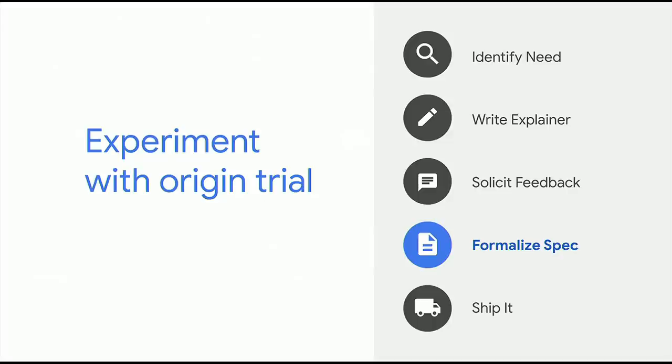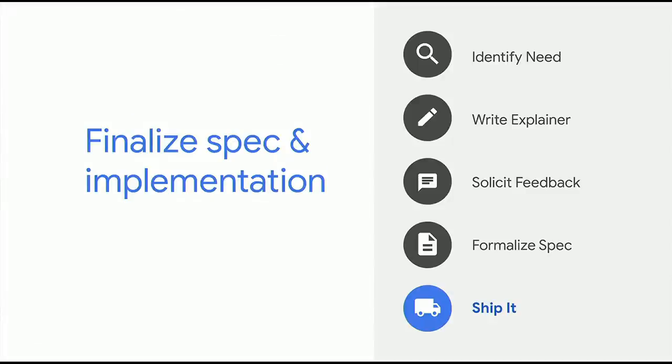As the design starts to stabilize, we typically use an origin trial to experiment with the implementation. Origin trials allow us to try new features with real users and get feedback on that implementation. This real-world feedback helps us shape and validate the design before it becomes a standard. Finally, once the origin trial is complete, the spec's been finalized and all the other launch steps are completed, it's time to ship it. So enough background — let's look at some real stuff.